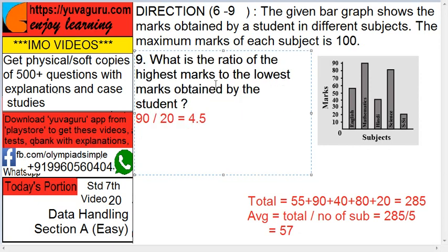What is the ratio of highest marks to lowest marks obtained by the student? What is highest? 90. What is lowest? Social science, 20. So 90 upon 20, which becomes 4.5.